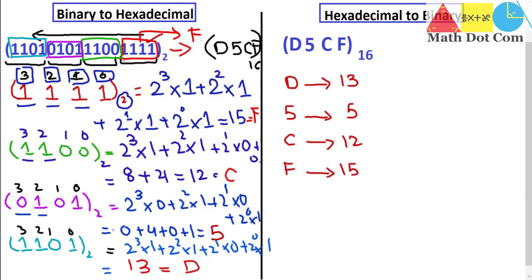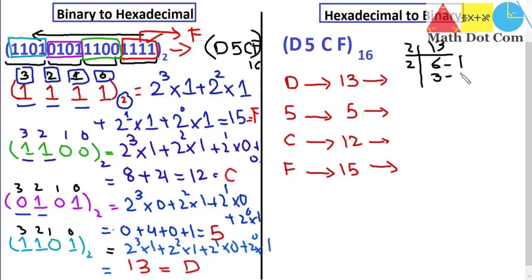Now we convert these decimal numbers into their binary equivalent using repeated division by 2. For 13: 13 ÷ 2 = 6 remainder 1; 6 ÷ 2 = 3 remainder 0; 3 ÷ 2 = 1 remainder 1; 1 ÷ 2 = 0 remainder 1. Reading remainders from bottom to top, the binary equivalent of 13 is 1101.